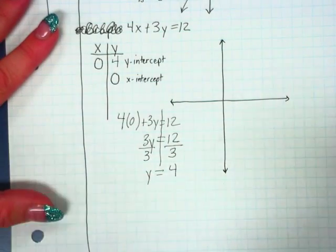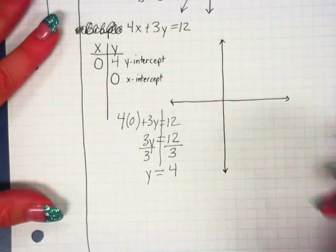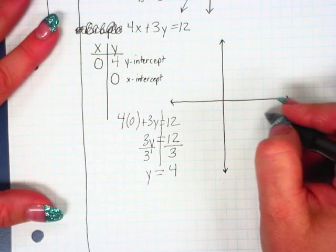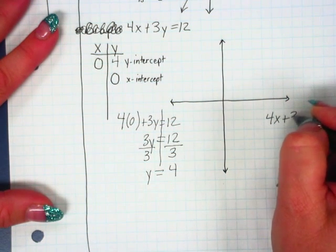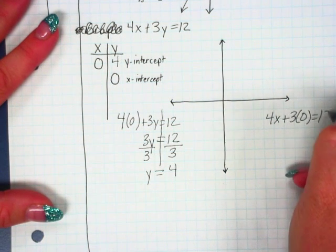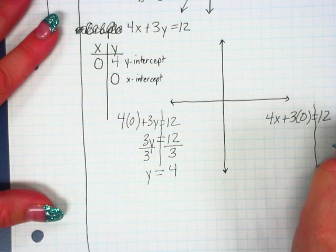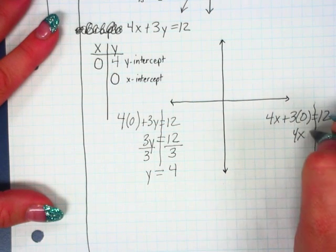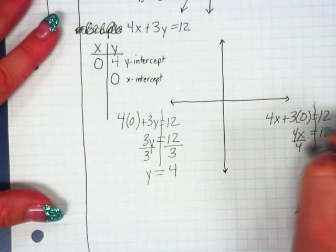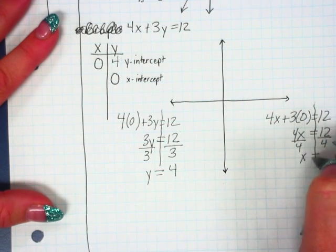What happens when the y is 0? So you take the same equation, plug it in. So 4x plus 3 times 0 equals 12. Draw your line. 4x equals 12. Divide by 4. x equals 3.